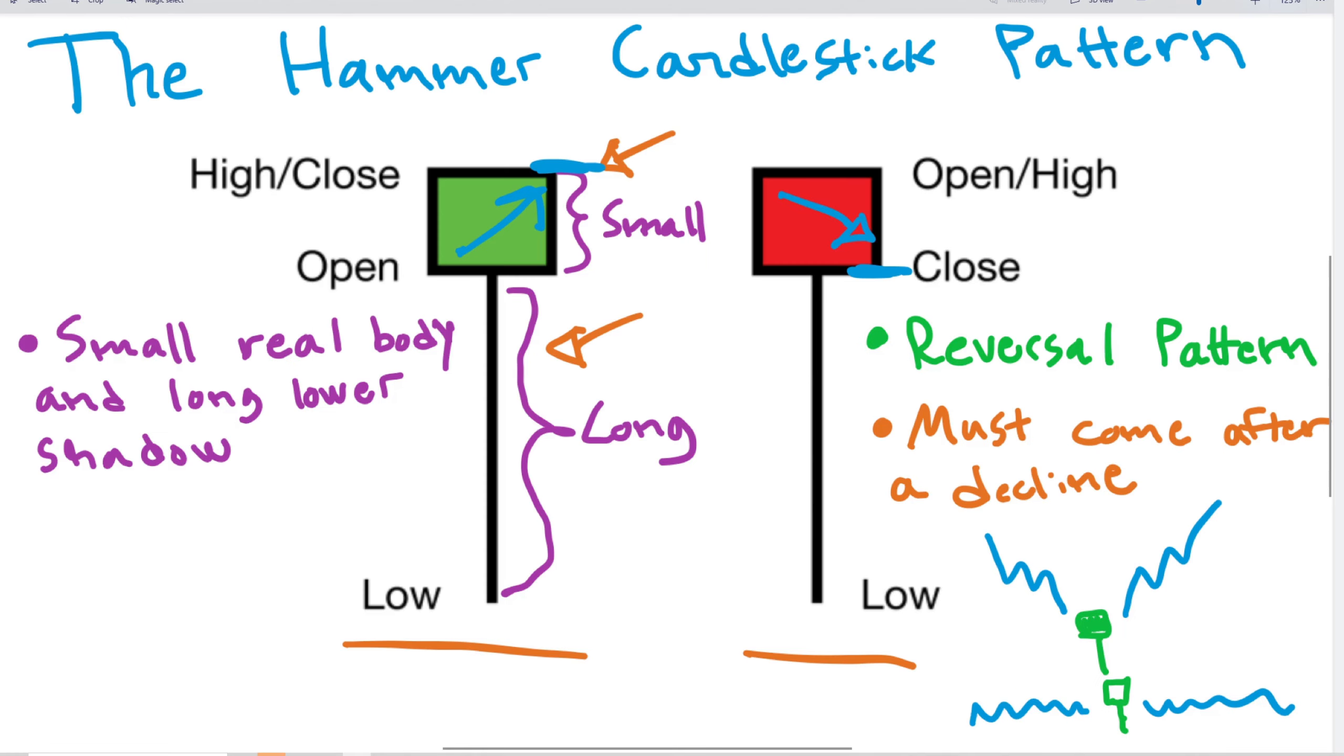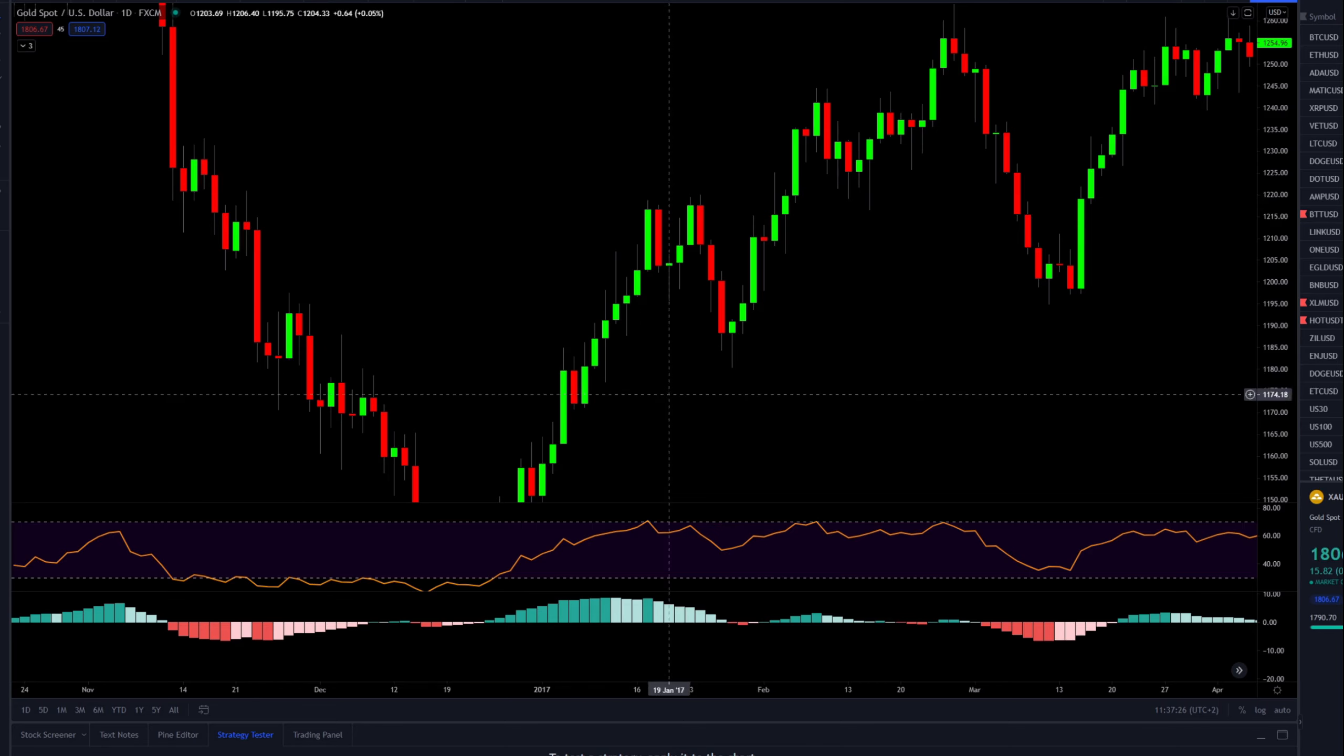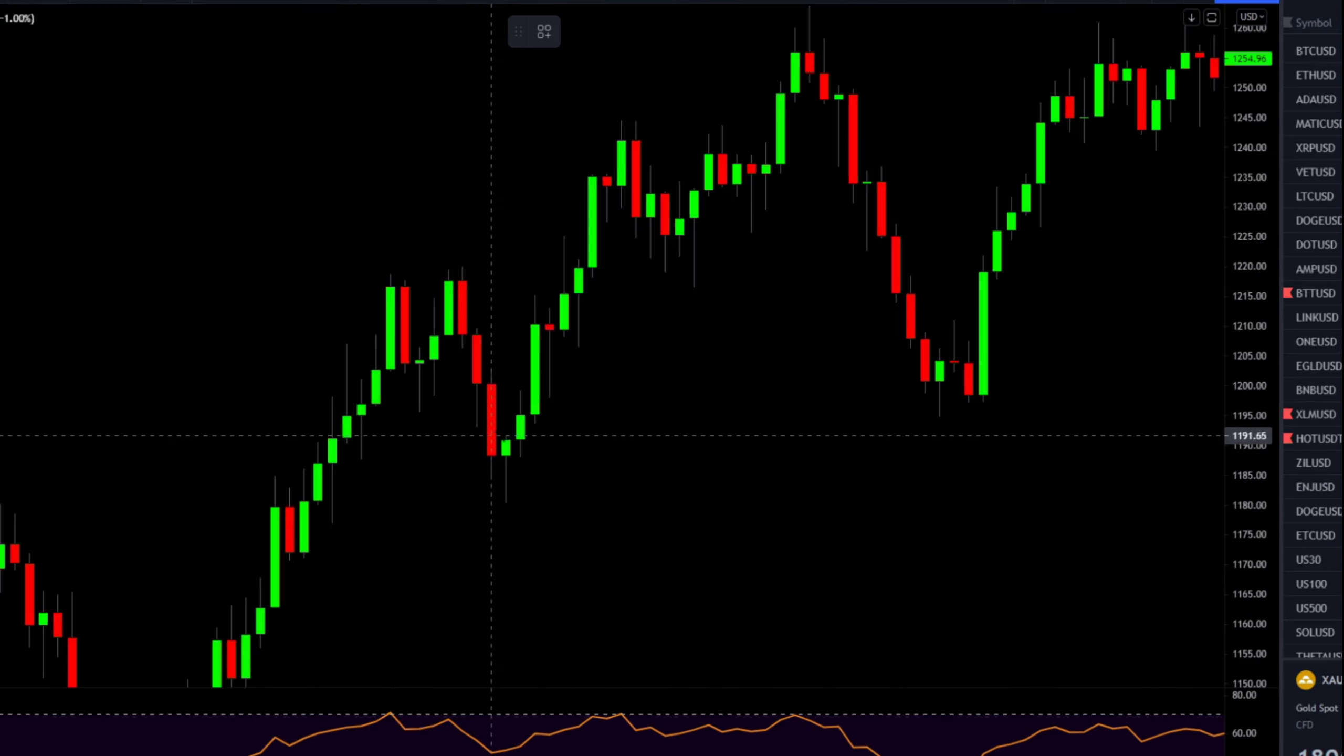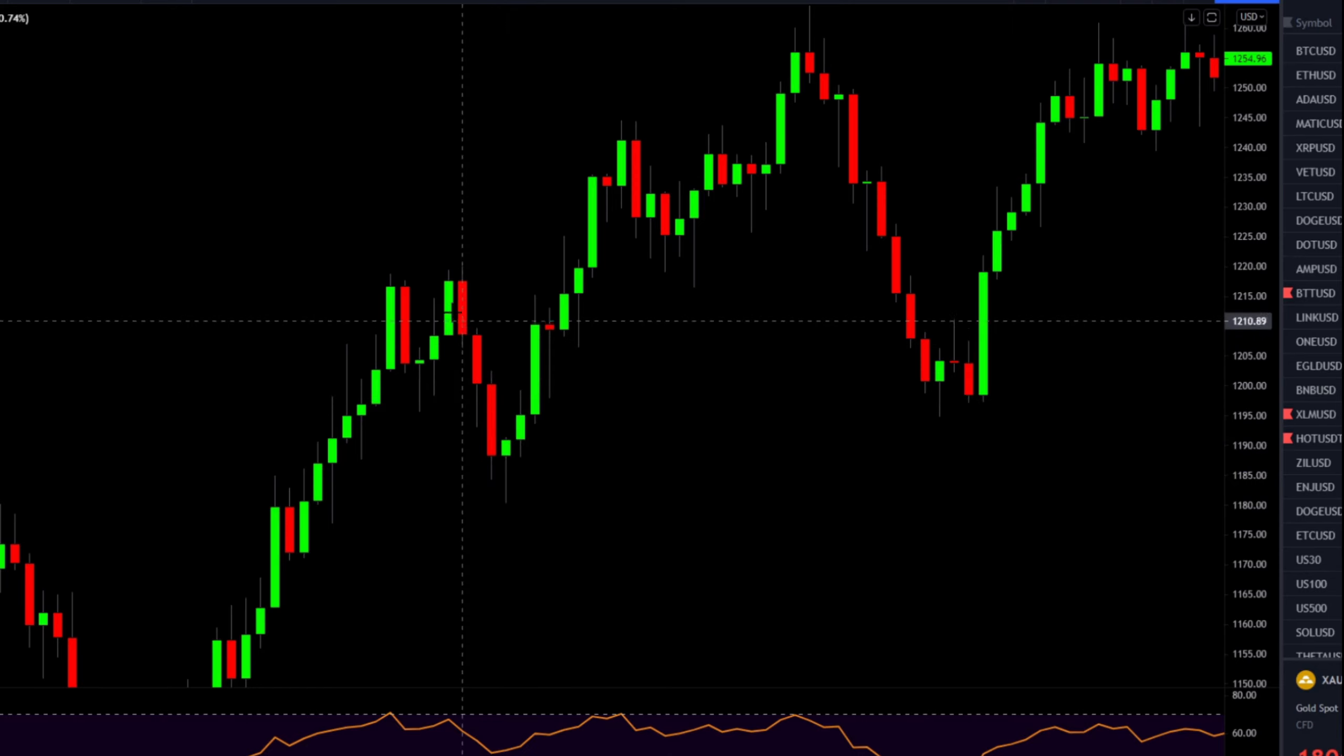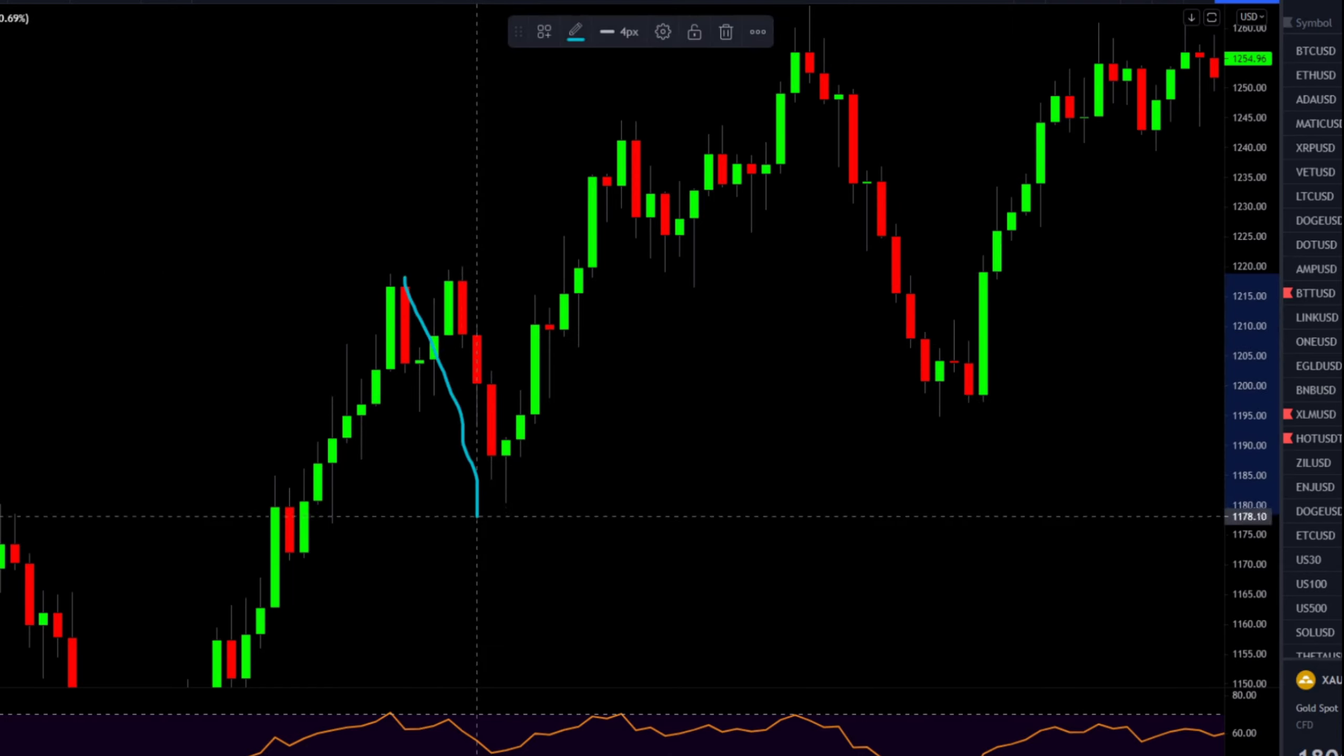Now when we have a brief understanding of the hammer candlestick, let's take a look at a quick example. So right now we are looking at the gold price and on the chart can you spot the hammer? Well the clear hammer on this chart is right here. As you can see here the shadow is more than twice the length of the real body. So that criteria is good and we can also see here that the hammer appears after a price decline. And in this case after the hammer we actually saw a very nice bounce to the upside. So in this case the hammer candle played out beautifully.